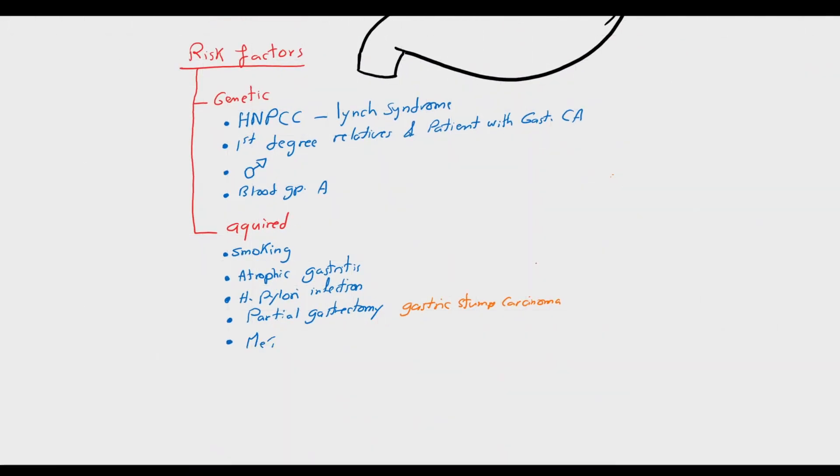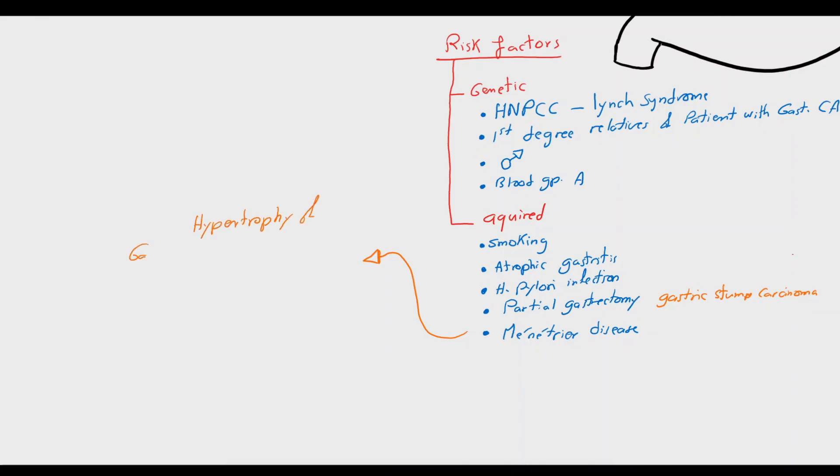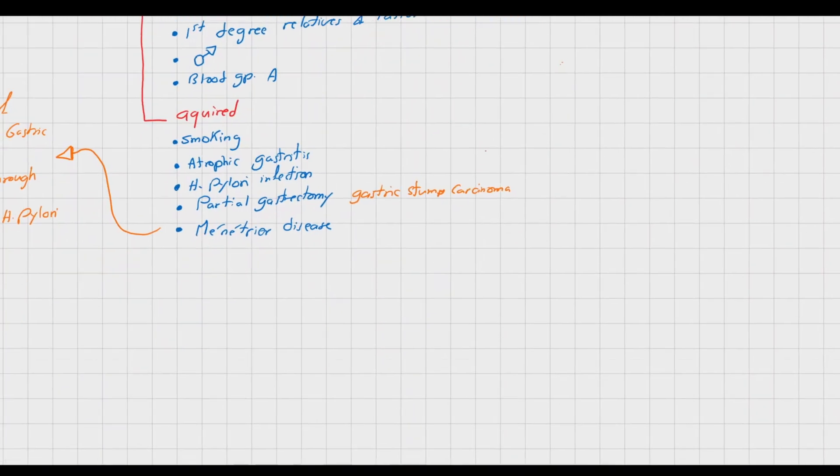Ménétrier's disease is a rare disease defined as hypertrophy of the gastric mucosa in which we can see huge gastric folds or rugae. It's characterized by protein loss through the gastric mucosa and is almost always associated with Helicobacter pylori infection.